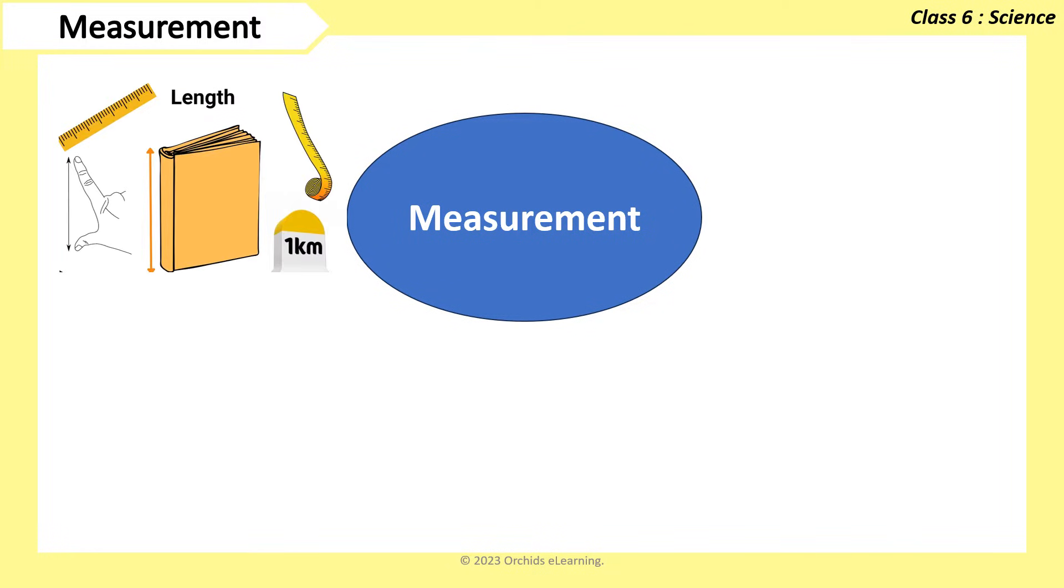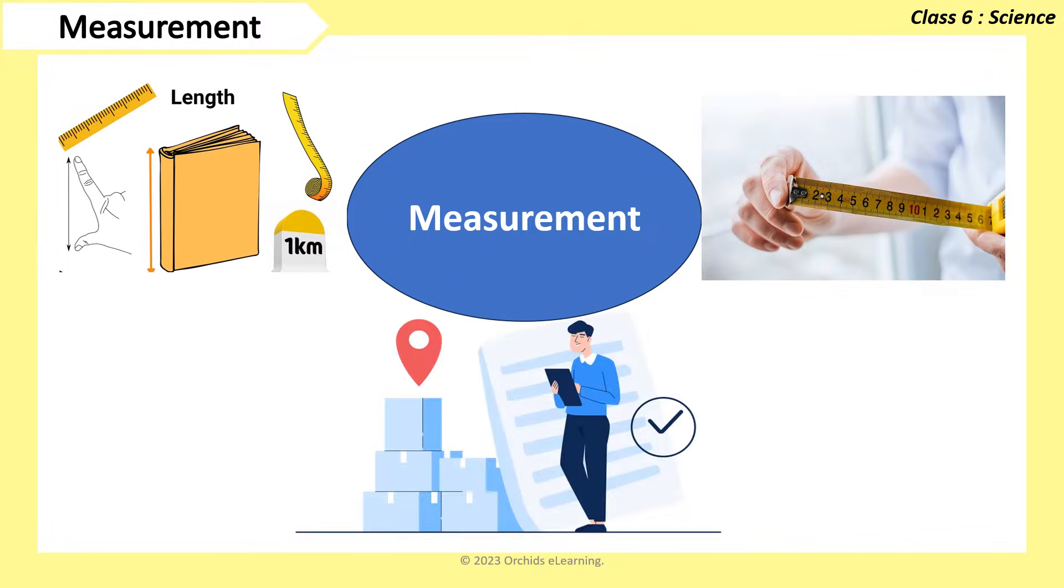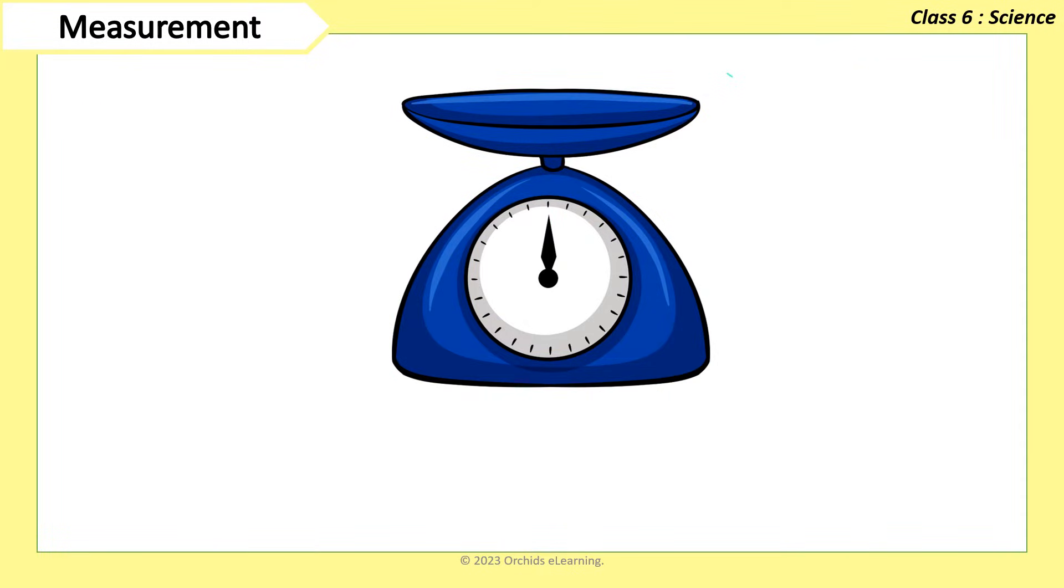Measurement is the process of finding the length, size, or quantity of a substance. When we talk about measurement, we have to think of two things: the measuring instrument and how to represent the measurement.